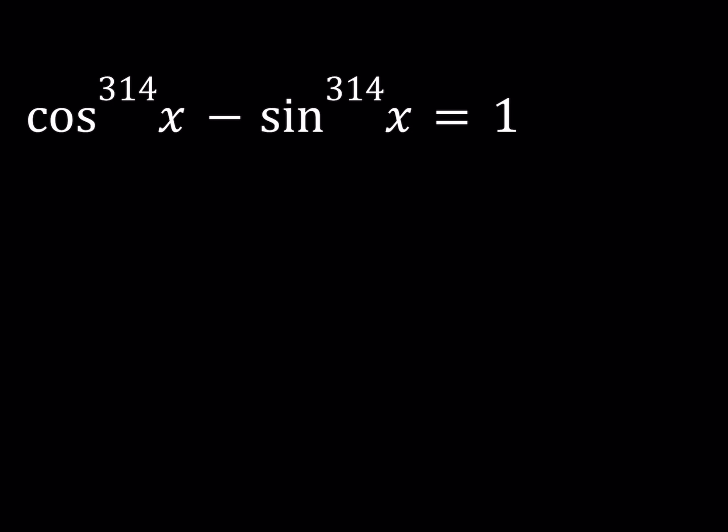Now, what are we going to do? Well, I'm going to isolate the cosine term on one side and you'll see in a little bit why I'm doing this. This makes so much sense, hopefully. So I have cosine x to the power 314, this is equal to 1 plus, if I add the sine term on both sides, then I should be getting something like this.